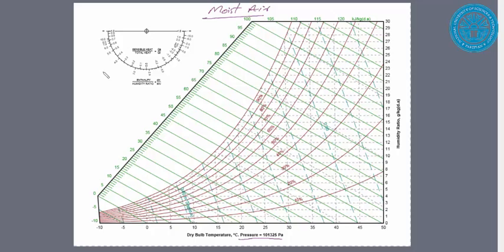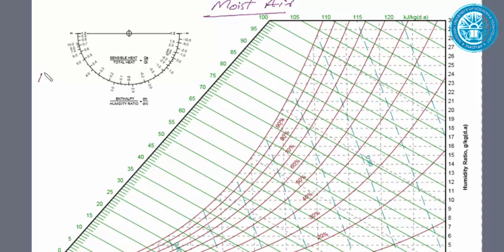Thermodynamic properties that we can read from this psychrometric chart are: dry bulb temperature (T), specific humidity (omega), and relative humidity (phi).